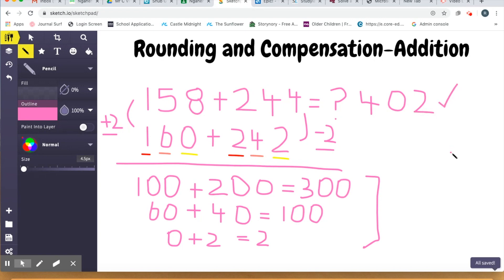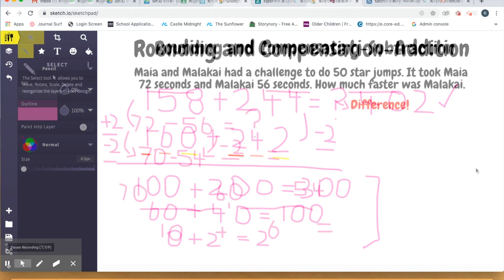So again, with a harder question like this, I could go straight for place value partitioning, but I've chosen here to do a little bit of rounding and compensating first to turn that into an easier version of place value partitioning when I get there.